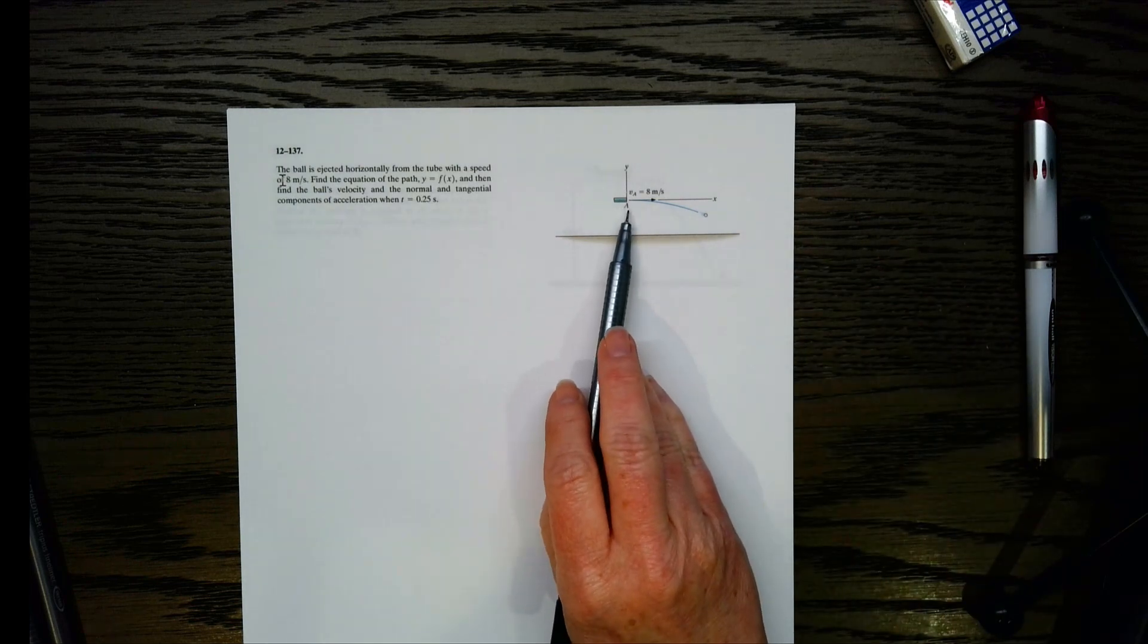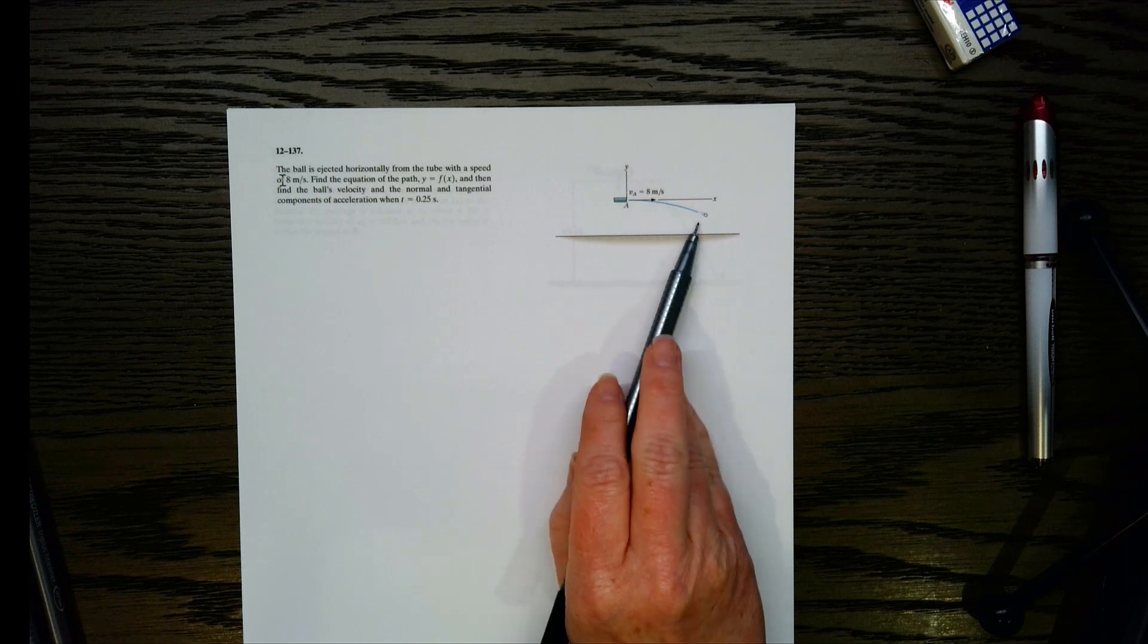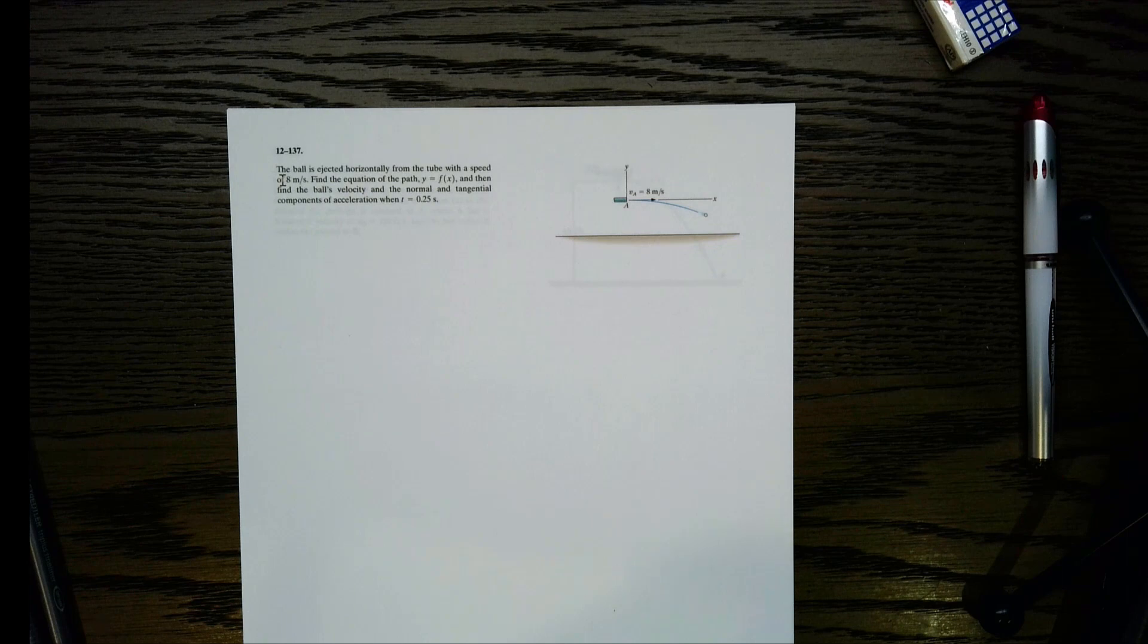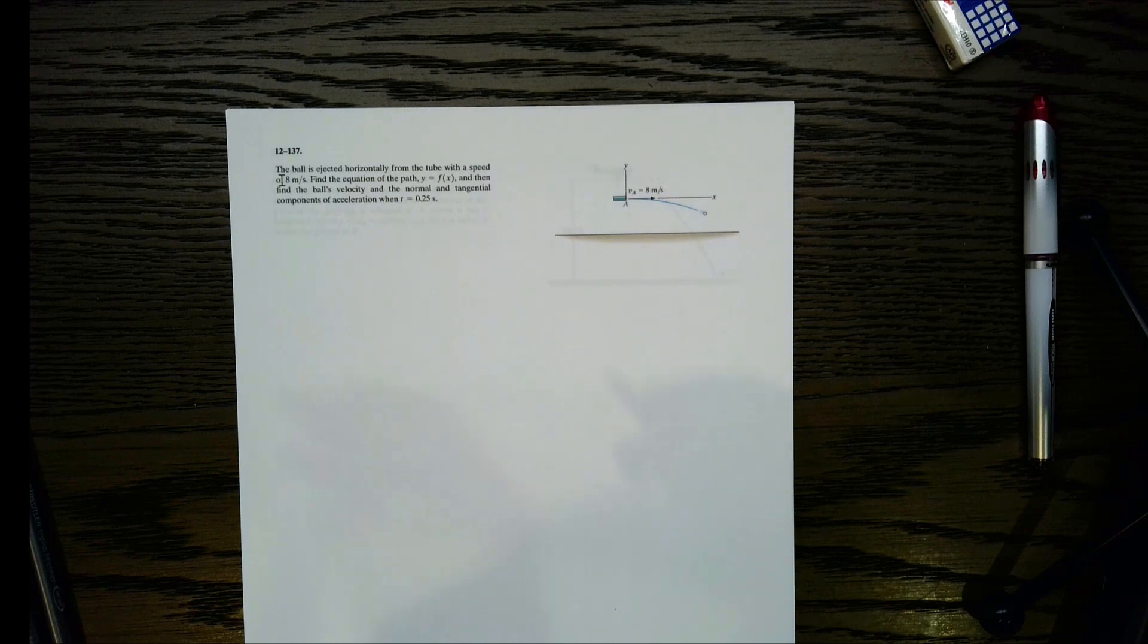So quite a few things to find there. And this one is actually an interesting problem. I kind of like this one. Now, first of all, let's look at this picture. So if you notice, we've got curved motion. If you look at that blue line, that's why it wants the normal and tangential components of acceleration, because since we have a curved path, we're going to have that normal component.